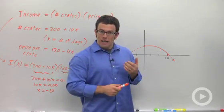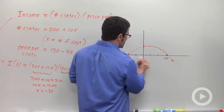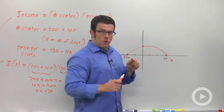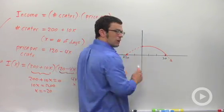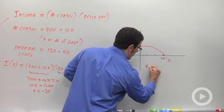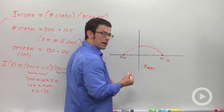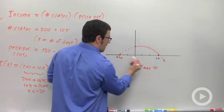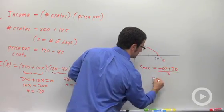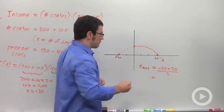The maximum occurs at the vertex. Parabolas have the property that the vertex is exactly halfway between the intercepts. So x-max, the x-coordinate where the maximum occurs, is the average of negative 20 and 30: negative 20 plus 30 over 2, which is 10 over 2, or 5.